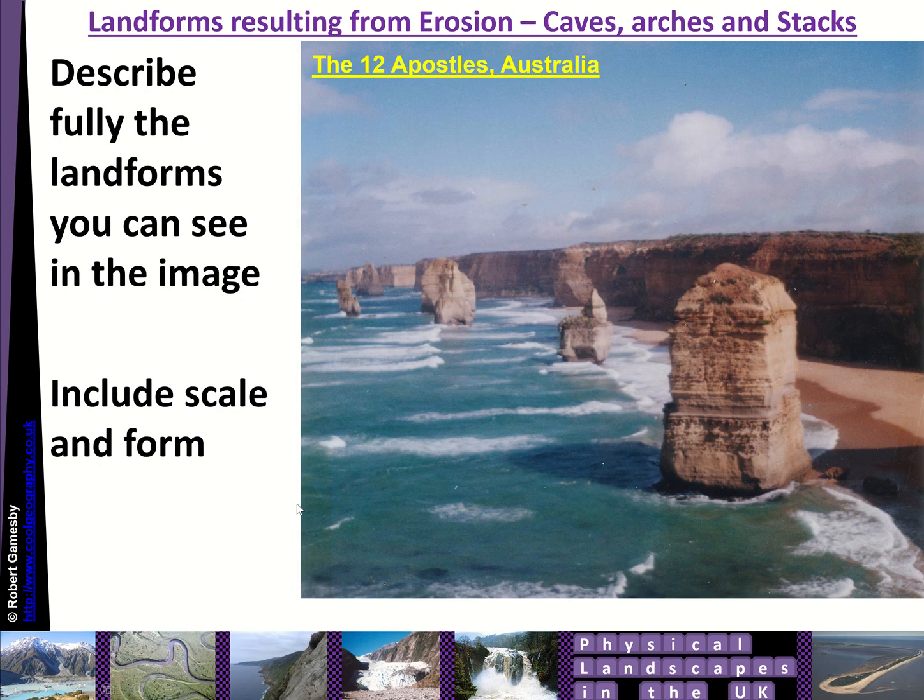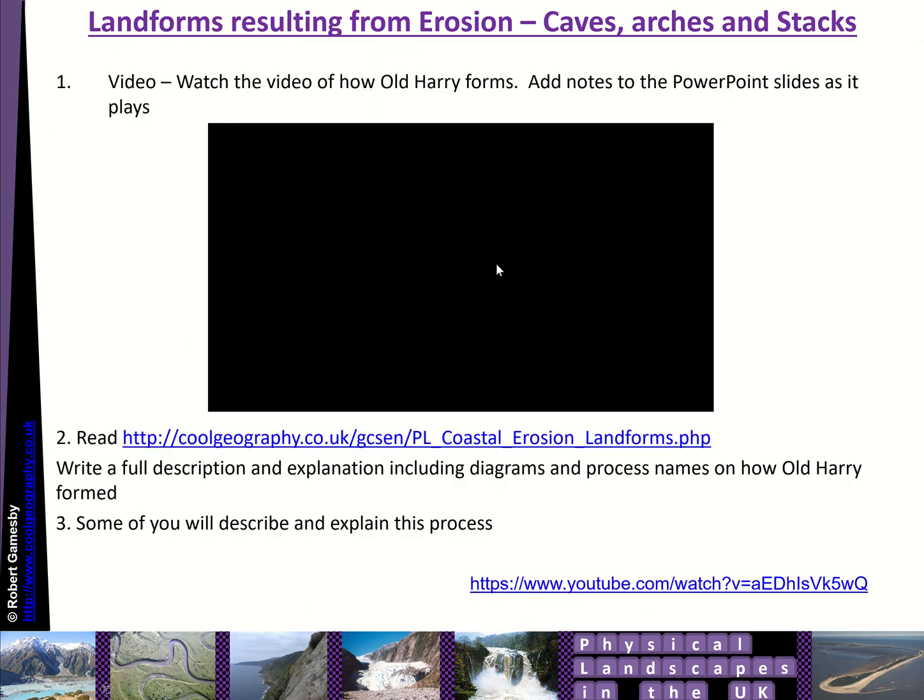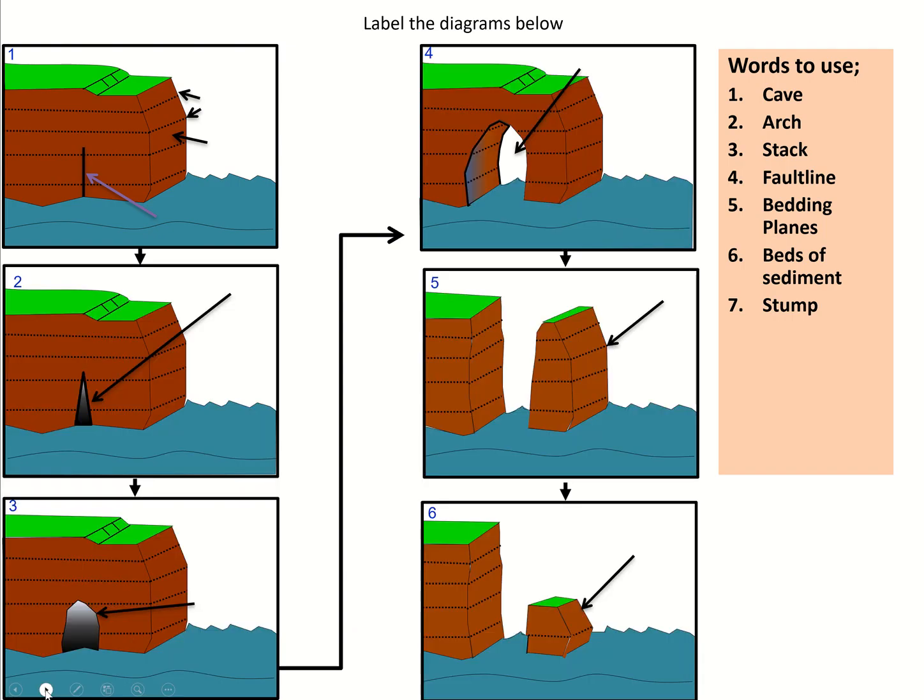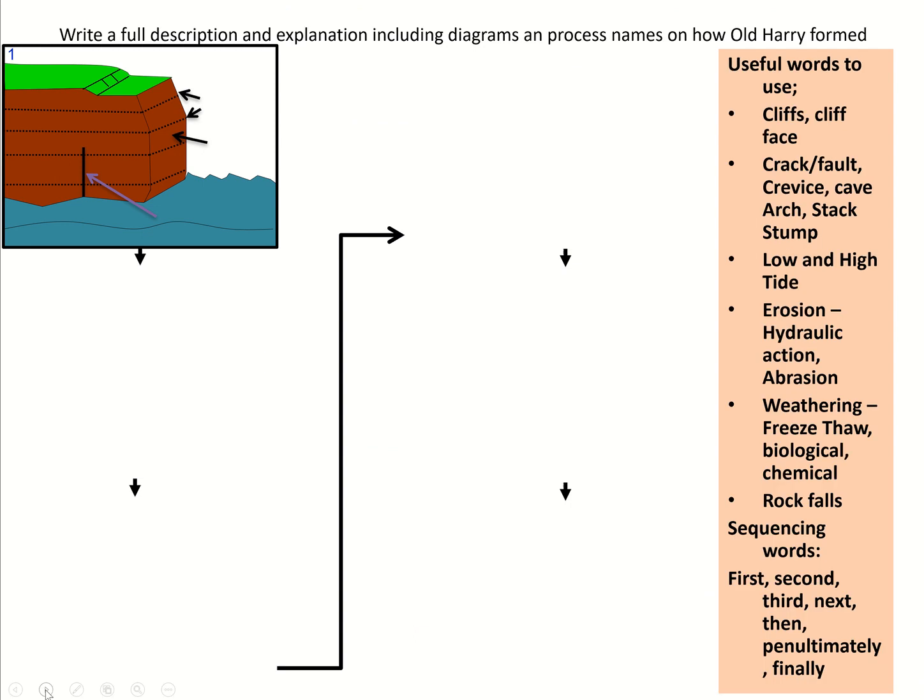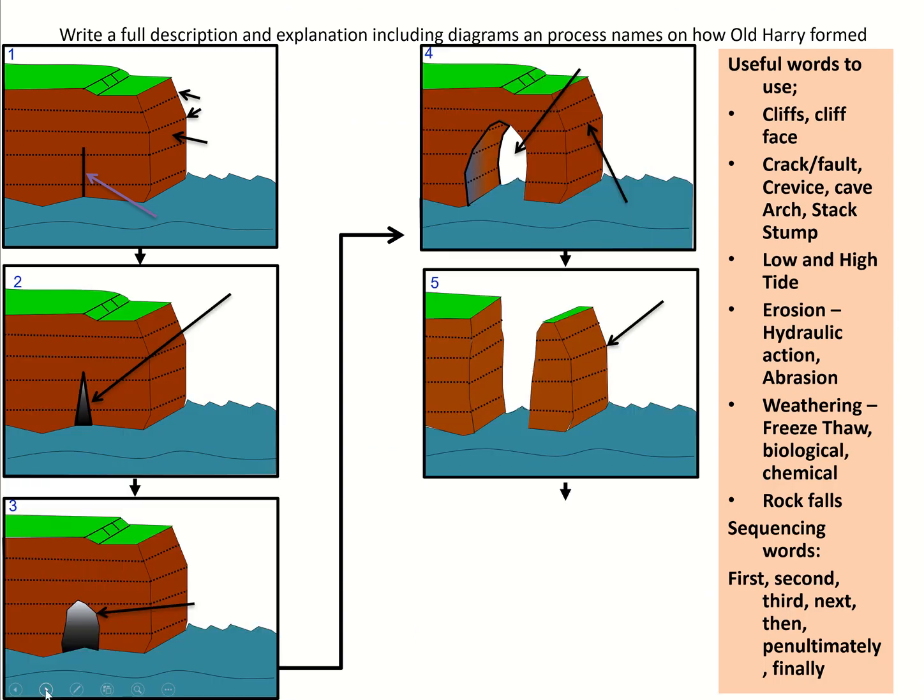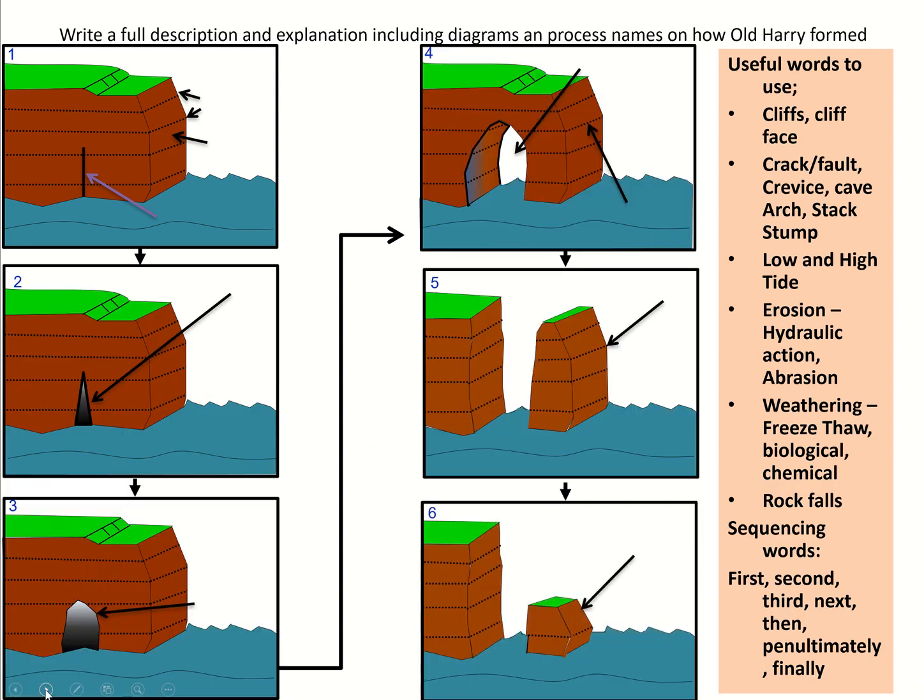In terms of your work, you can describe the landforms on the image, try to include scale and form. Watch the video on how Old Harry forms and write a full description. Then label up these images with those labels and write an explanation next to each diagram as to how they are created.